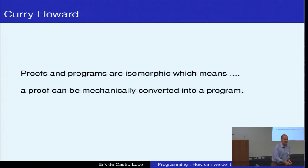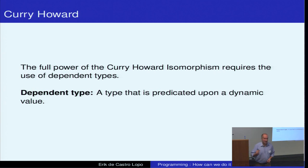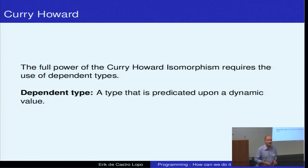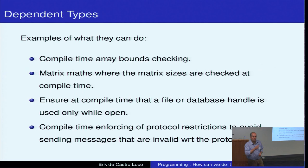Proofs and programs being isomorphic means that a proof can be mechanically translated into a program. You can simply write a program that takes a proof in mathematics and converts it into a piece of software. The full power of the Curry-Howard isomorphism requires dependent types. A dependent type is a type where the types are dynamic — they're still evaluated at compile time, but they're not strictly just 'int' or 'array'. Compile time array bounds checking is dependent typing.